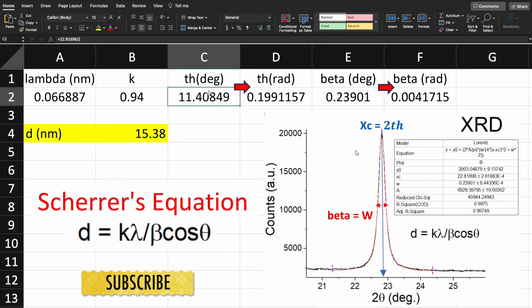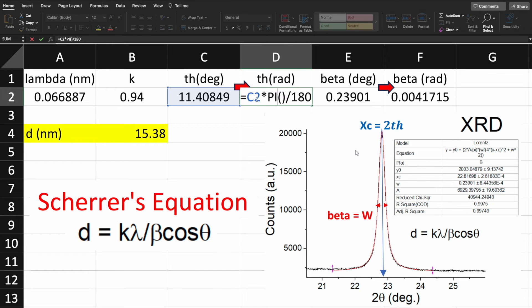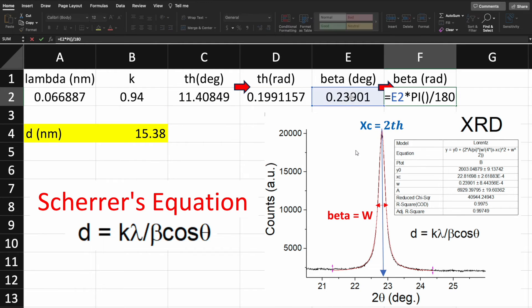First thing we need to do is convert into radians. Multiply this number, that is 2 theta, with pi divided by 180. Similarly for beta, which is again in degrees, multiply this number with pi divided by 180. This way we get theta and beta values in radians.